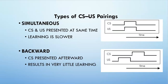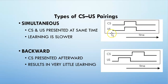Next we have simultaneous pairing — the CS and US are presented at the exact same time; they turn on together and turn off together. Does this work for learning? Yes, however it causes learning to occur slower, mostly because the animal or human tends to focus on the US since that's what's giving them the response. The CS is kind of happening in the background and they're not focusing on it, so learning does occur but it takes a lot more time — it has a longer acquisition phase.